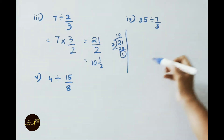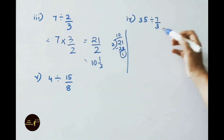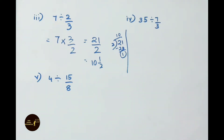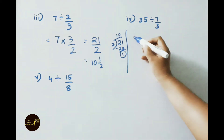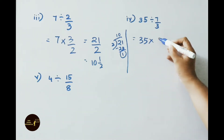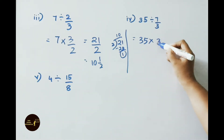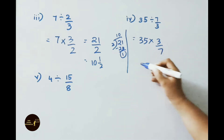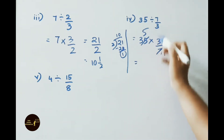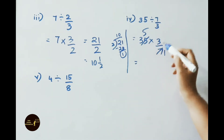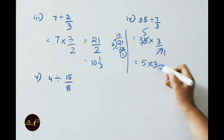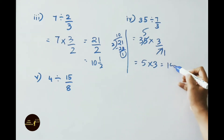See the next sum, 4th question: 35 divided by 7/3. That equals to 35 × reciprocal of 7/3, which is 3/7. 7 goes into 35 five times. Multiply the numerators: 5 × 3 = 15. The answer is 15.